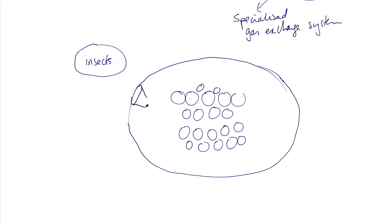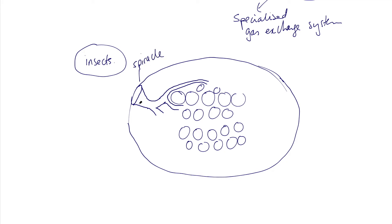What you have are large tubes that branch, and as they branch they get smaller and smaller and thinner as well, until near the cells it's kind of one elongated cell. From the surface you have an opening — that opening is called a spiracle — and that opening then extends into a tube which we call the trachea.